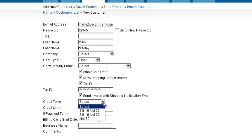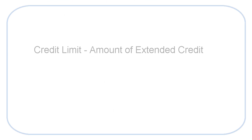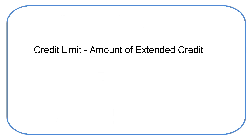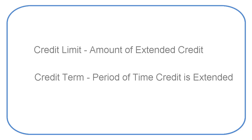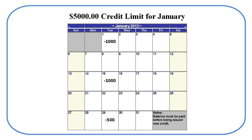Now you can set a payment term and credit limit. Credit limit refers to the amount of credit extended to that customer. Credit term refers to the period of time the credit is extended. For example, a customer may have a $5,000 credit over 30 days. Even if the customer uses only $2,500 in the 30 days, they will still need to pay the balance before being issued credit for the next order.